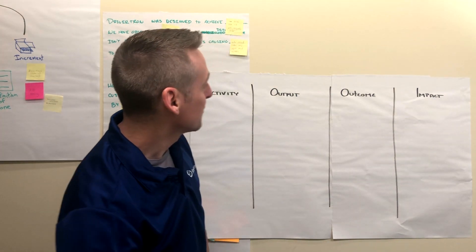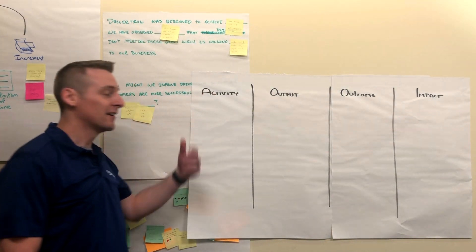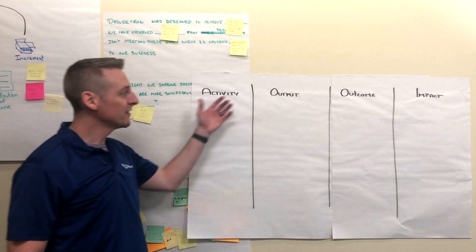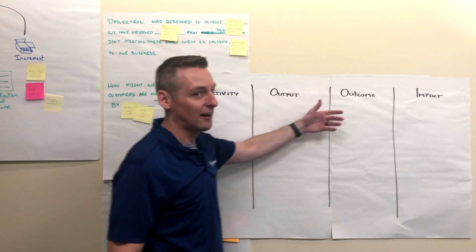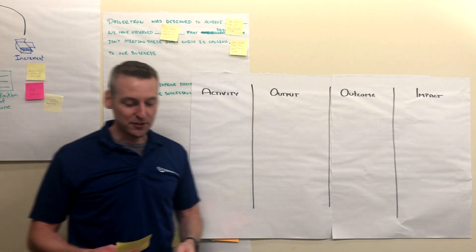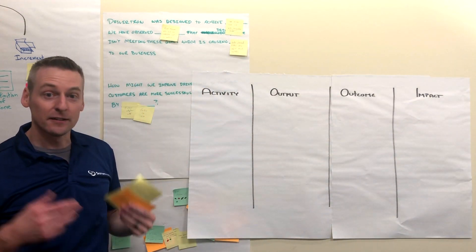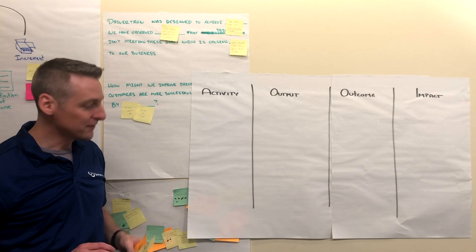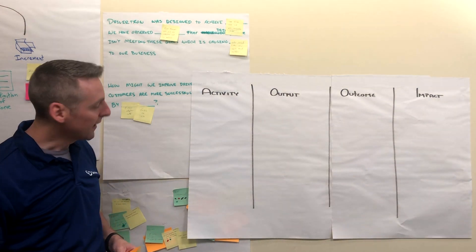When we're thinking about metrics, we often bring them down into four categories: activity, output, outcome, and impact. And I want to give you a different idea to think about for each of these categories.